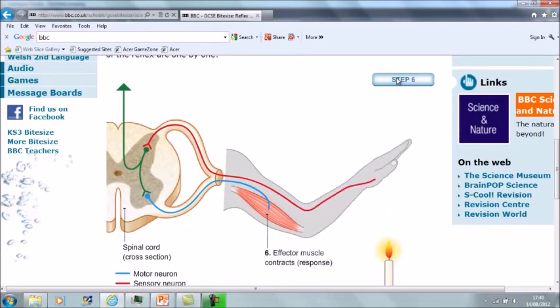This causes the muscle to contract and it pulls the hand away from the heat. This is known as a reflex arc because it doesn't involve the brain, it only involves the spinal cord.